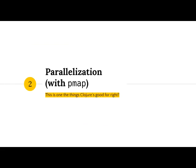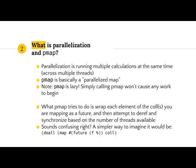Let's move on into parallelization. First we're going to talk about PMAP. Parallelization is basically running multiple things at the same time across multiple threads. PMAP is just a parallelized map — it runs map across multiple threads. It splits up your large collection into smaller collections, runs them across multiple threads, and joins them at the end. One important thing: PMAP is lazy, so just calling PMAP won't cause any calculation to begin.